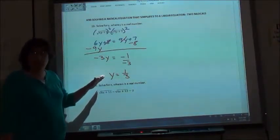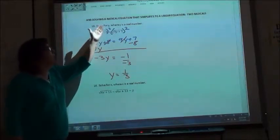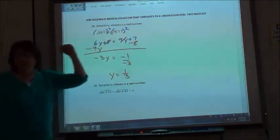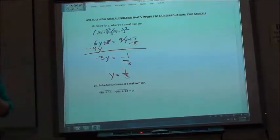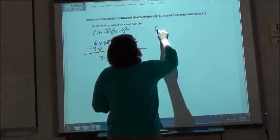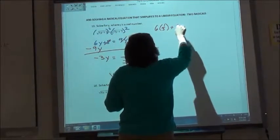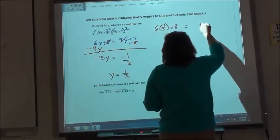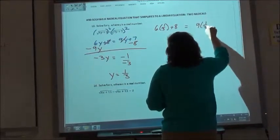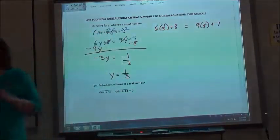Now, these ones we have to check because sometimes you get one answer that's positive and one answer that's negative when you check them, and then you get a no solution. So what we're going to do is we're going to take our calculator, and we're going to do 6 times 1 third, which was our y value, plus 8. And then we're going to do 9 times 1 third plus 7 to see if we get the same number or not. So use your calculator.